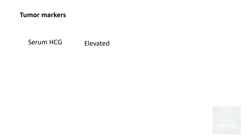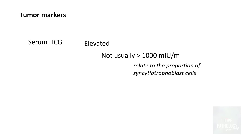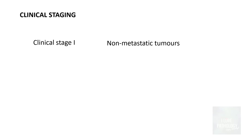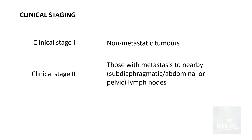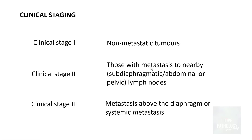Serum markers can help in the diagnosis of seminomas — particularly serum HCG levels, which are often elevated, though usually not more than 1000 milli-international units per mL. This elevation is related to the proportion of syncytiotrophoblastic cells within the seminoma. Clinically, seminomas are staged as stage 1, 2, and 3. Stage 1 tumors are non-metastatic and confined to the testicular parenchyma. Stage 2 tumors metastasize to nearby abdominal or pelvic sub-diaphragmatic lymph nodes. Stage 3 seminomas have metastasized above the diaphragm or have systemic metastasis.